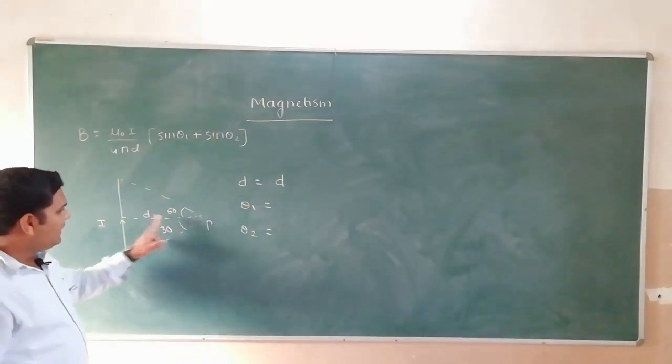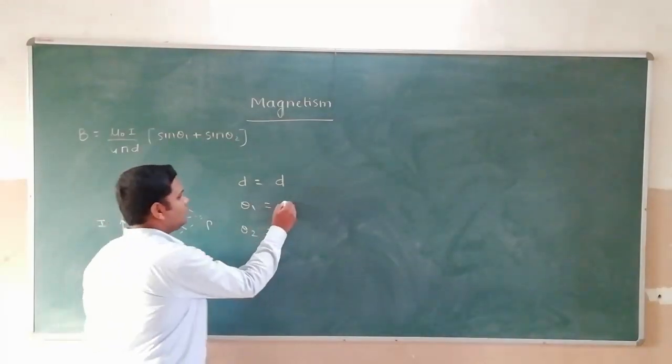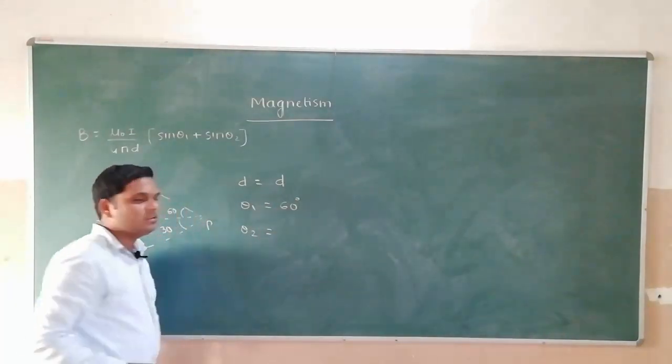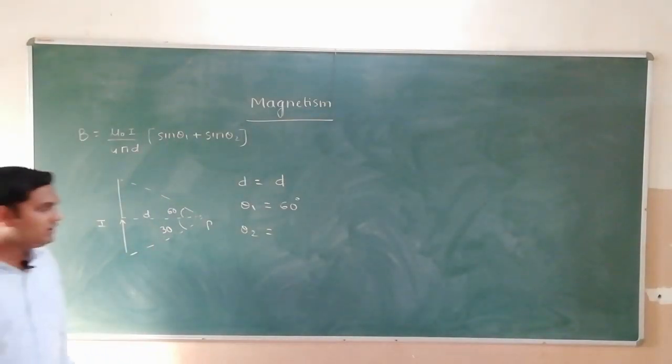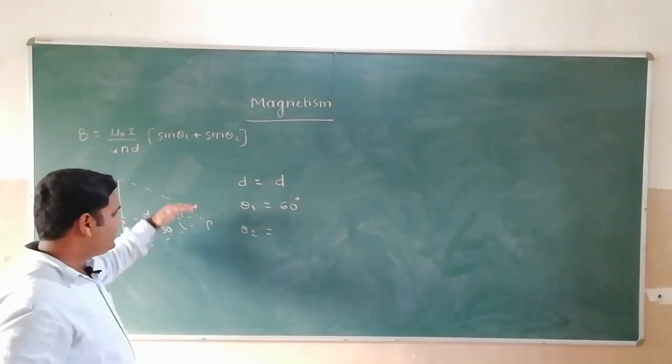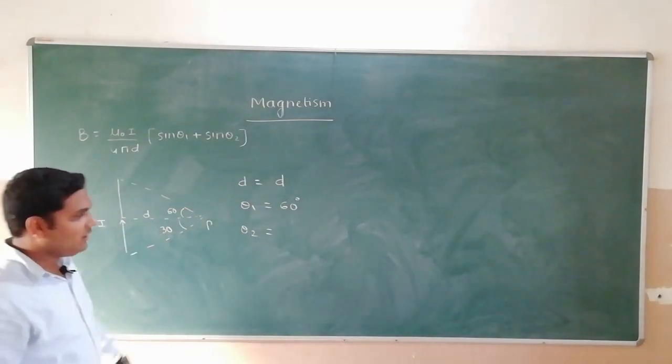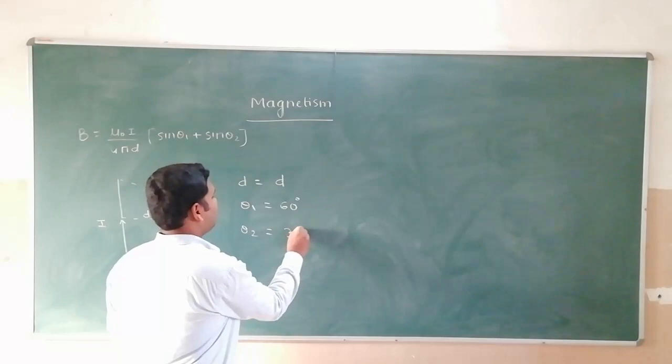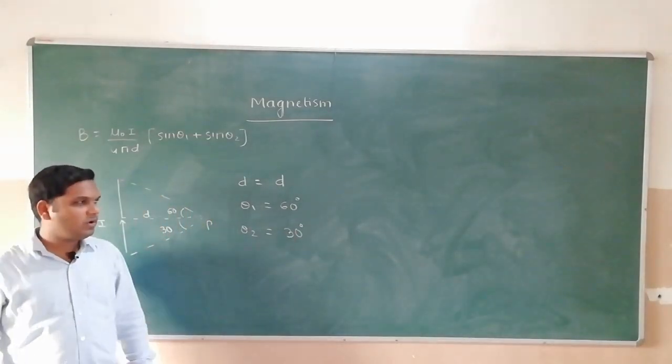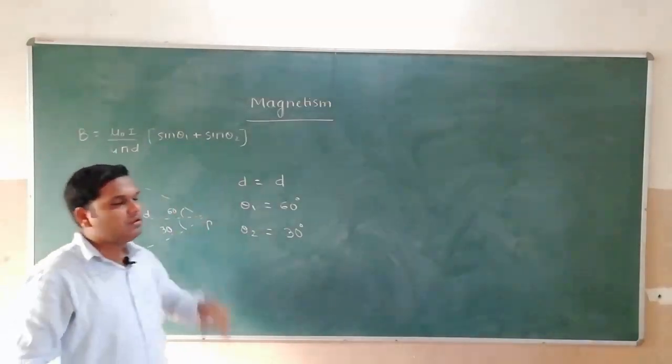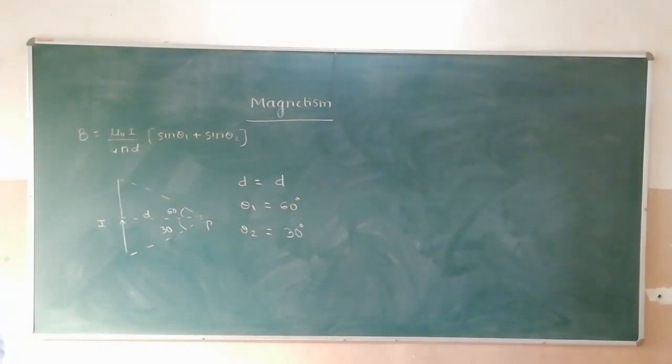D will be D because the shortest distance from here to point P is D. Theta 1, this line from this end shows 60 degrees at the top, so theta 1 you will write as 60 degree. Theta 2 you will write as 30. Then substitute these values and automatically you will get the answer.